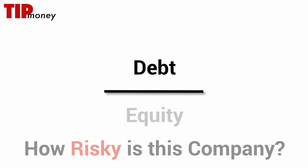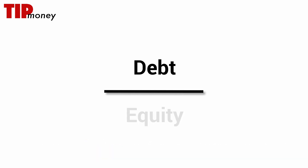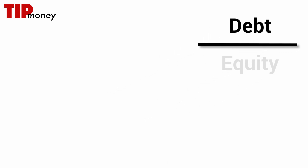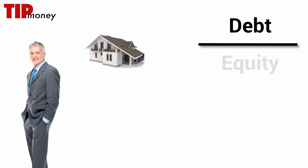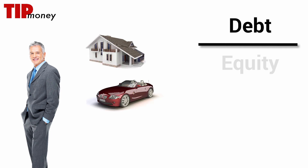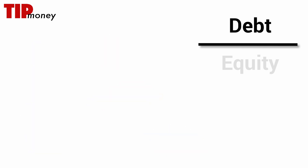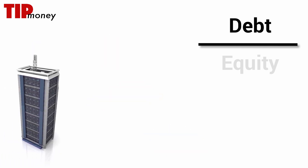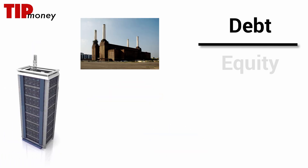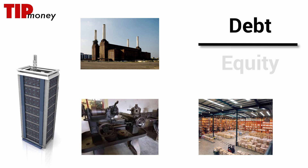The first component of the debt to equity ratio is obviously the debt. This number is pulled from the total debt on the company's balance sheet. For an individual person, their total debt might be their house payment, their car payment, and whatever credit card bills they have. For a company, it's no different — the company might have debt for their factories, the expensive machines, and the short-term inventory that they had purchased.